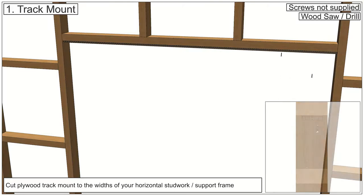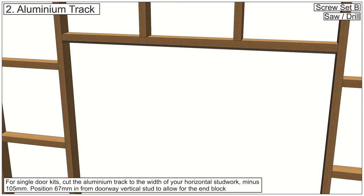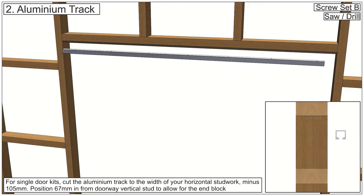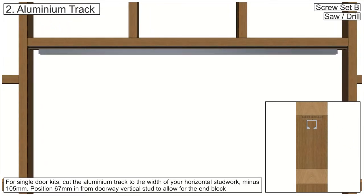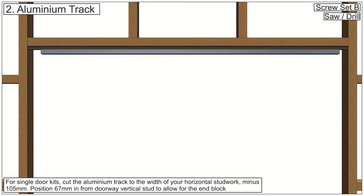Use appropriate fixings to fix track mount to stud work. Ensure 67mm and 38mm gaps between aluminum track and structural opening to allow installation of trolley assemblies.